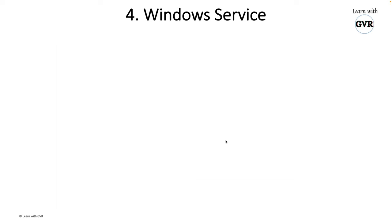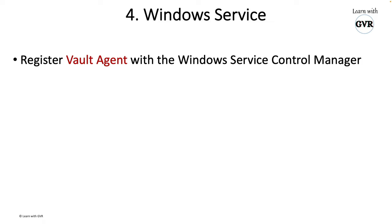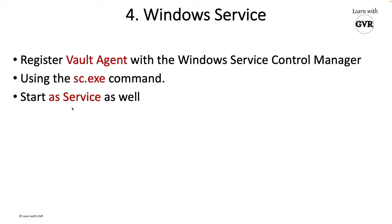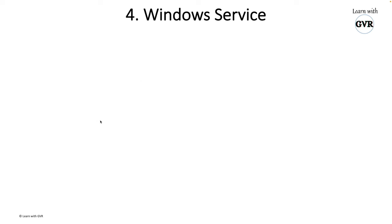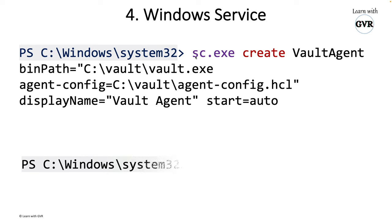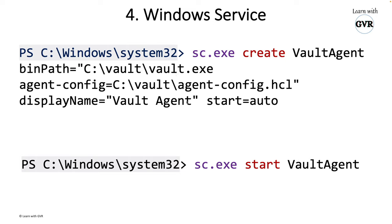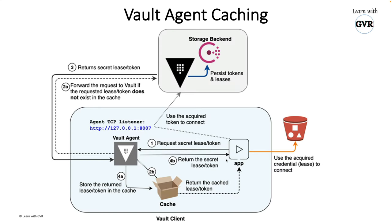For Windows service, if your Vault client is on a Windows system, you use the Windows Service Control Manager (sc.exe). The PowerShell command is: sc.exe create vault_agent, pass the vault executable path and the agent configuration file. It will start the service automatically — it's a simple command.